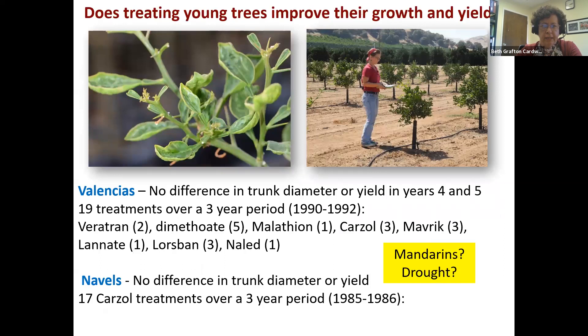Joe Morris and I did some work in the early 90s to look at whether treating citrus trees constantly with insecticides versus doing nothing made any difference in trunk diameter or yield in years four and five. With both lemons and navels we saw no difference whatsoever. Now we have mandarins, and the last six to eight years we've had severe drought and heat. I used to say don't treat young mandarins aggressively for citrus thrips — it's not impacting their development. But now I'd qualify that, because we're in a much more stressful situation and we need to study mandarins and the impact of drought on this whole system.